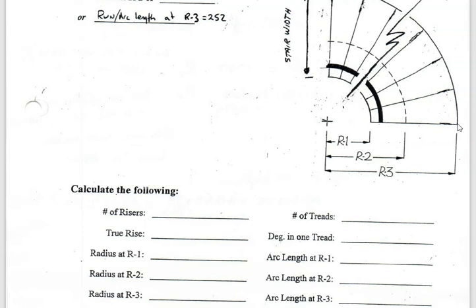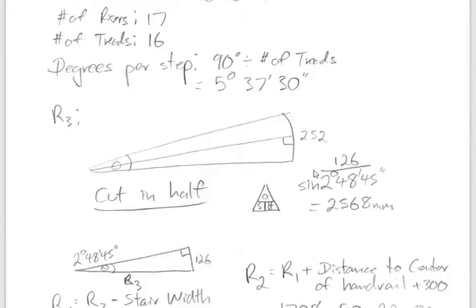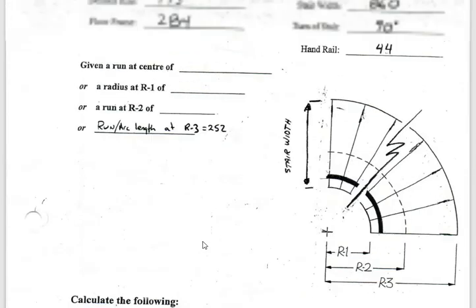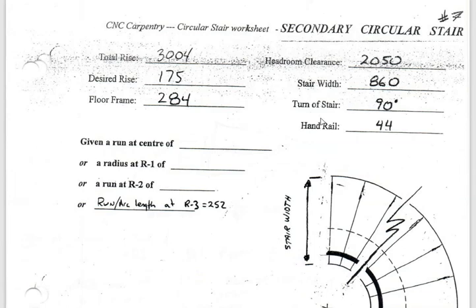From R3 we can now get R1 and R2. R1 is simply R3 minus the full width of the stair. The stair width was given as 860, so R1 = 2568 − 860 = 1708.